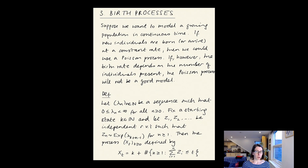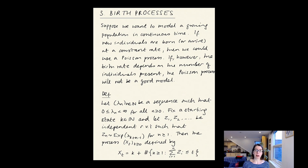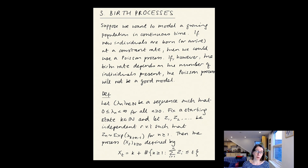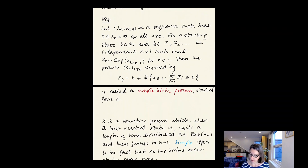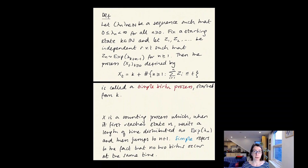Suppose we want to model a growing population in continuous time. If new individuals are born or arrive at a constant rate, then we could just use the Poisson process. If on the other hand the birth rate depends on the number of individuals already present in the population, then the Poisson process is not going to be a good model. And that motivates the following definition.